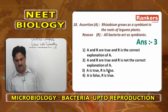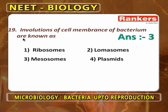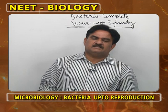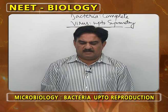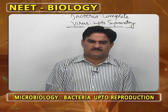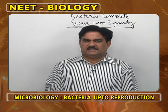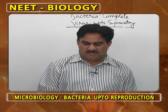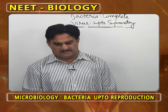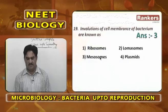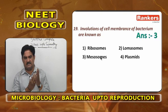Involutions of the cell membrane of a bacterium are known as mesosomes — not ribosomes, not lomosomes, not plasmids. Ribosomes are 70S ribosomes; lomosomes are not found in bacterial cells; plasmids are extrachromosomal circular genetic material. The answer is mesosomes — third option.